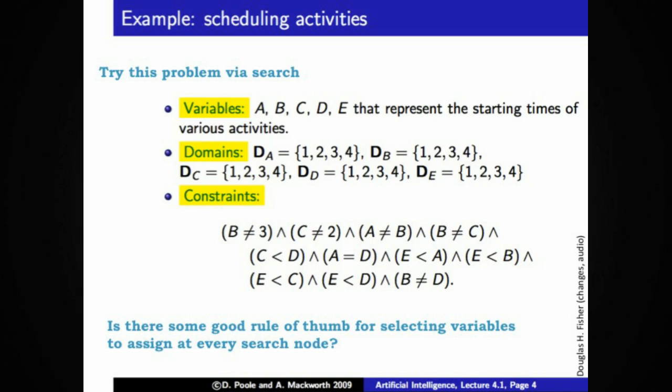Here's another example that you can try to solve through search. Very much like the earlier example, except we've got a couple more variables, D and E, and we've got more constraints. Some of these constraints, you'll note, are relationships between variables. A is not equal to B. B is not equal to C. C is less than D, just like we saw in the previous example. But some of these constraints are not relationships between two variables. B does not equal 3. C does not equal 2. Those are constraints on individual variables, much like we saw in the earlier video on machine learning and rotogravure printing, in which we had a machine learning system discover constraints on single variables.